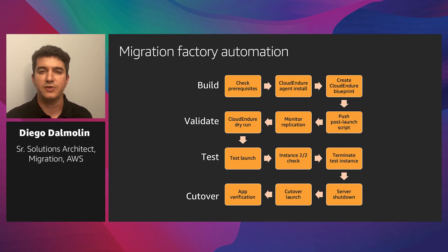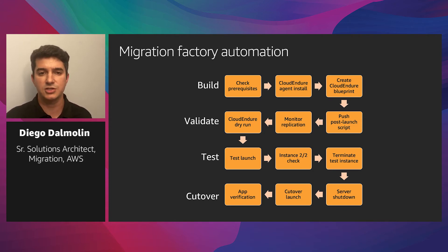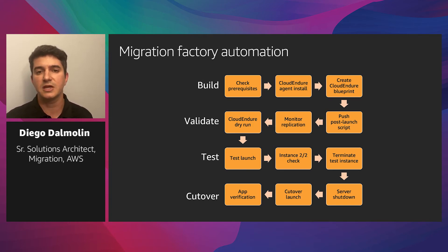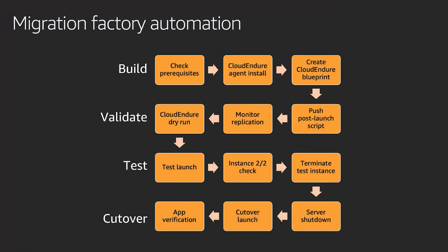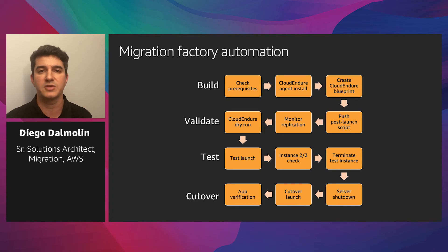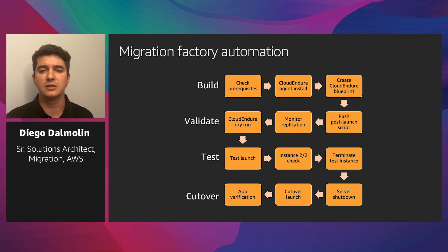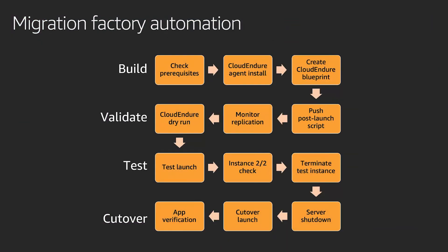A proposed CloudEndure migration factory assembly line would look like this. During the build phase, we start checking the prerequisites on the servers, install CloudEndure agents, and create CloudEndure blueprints. During the validation phase, we push the post-launch scripts to the source servers, start and monitor data replication, and get ready for the dry run. During the test phase, once the data is fully replicated and in sync, we test if the servers can be properly converted to Amazon EC2. Once the test is successful, we terminate the test environment. Finally, when we are ready to migrate, we start the cut-over phase — shut down the source environment, execute the server cut-over, and verify if the migrated applications are working as expected.